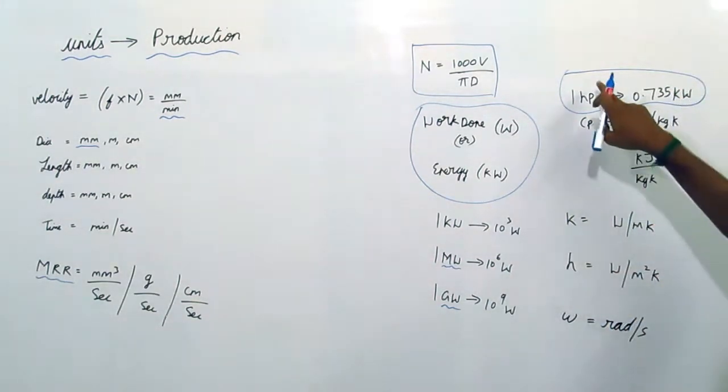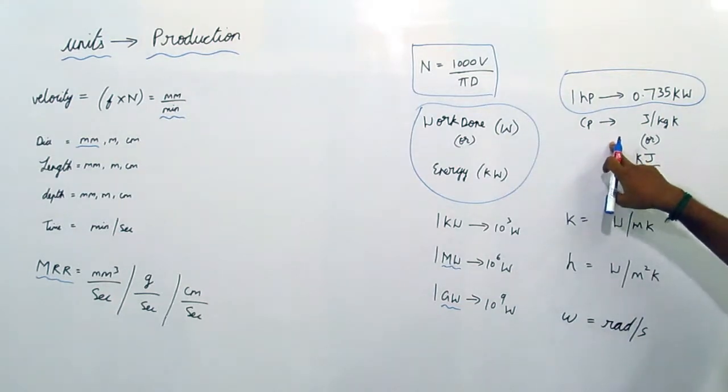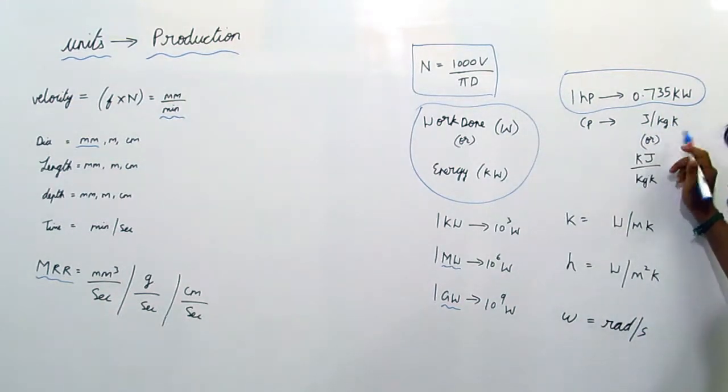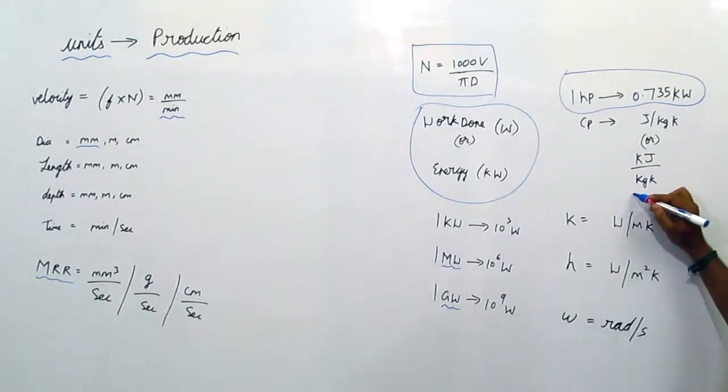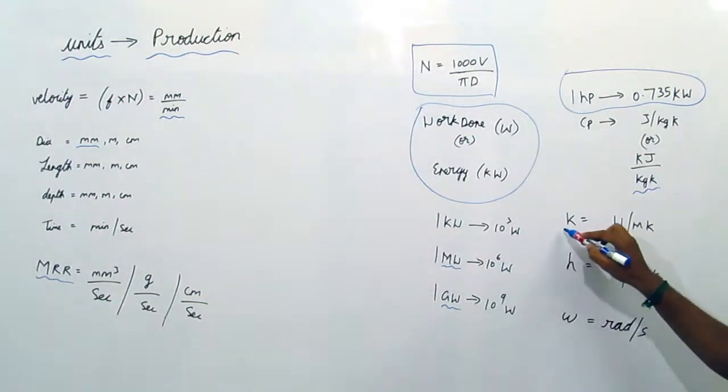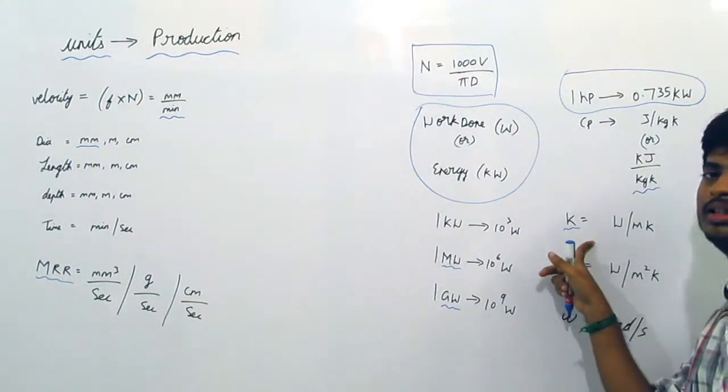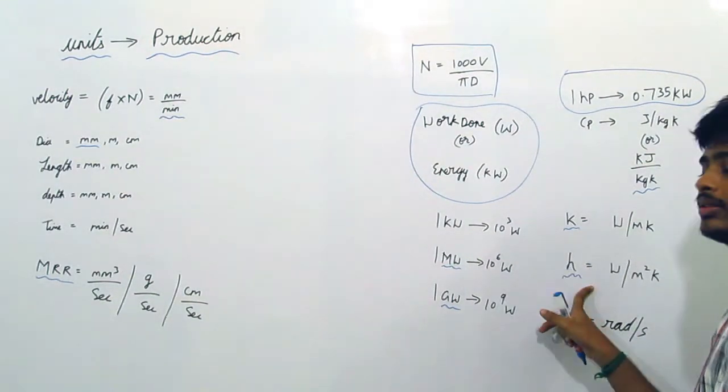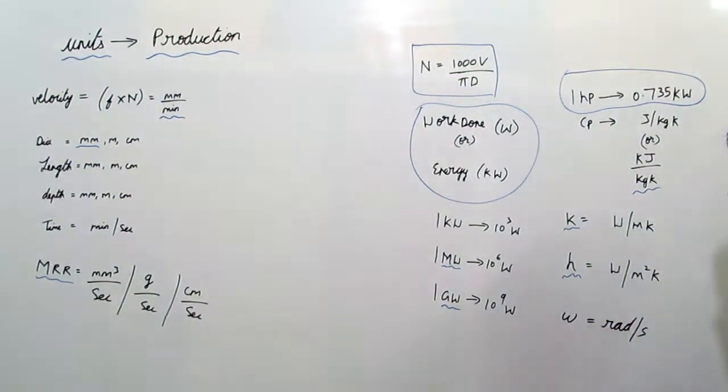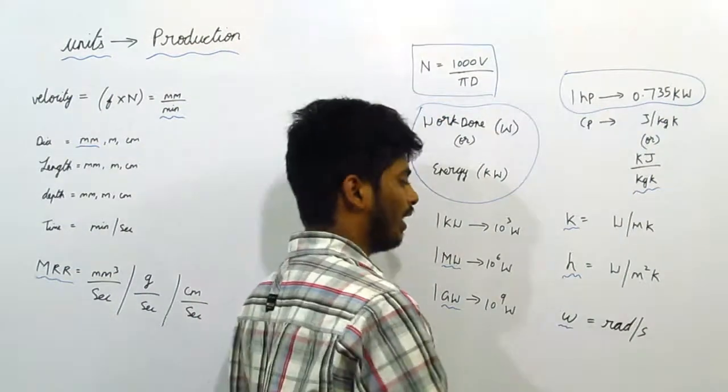This latent heat is given by joule per kg kelvin or kilojoule per kg kelvin. K and h we have already studied. K is thermal conductivity, h is heat transfer coefficient. K is given by watt per meter kelvin, h is given by watt per meter kelvin.